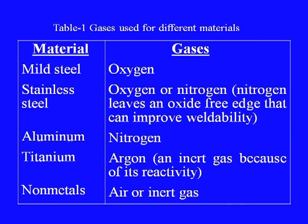The use of different assist gases with different work materials is given in a table. For mild steel, oxygen is used as the assist gas. For stainless steel, oxygen or nitrogen is used; nitrogen leaves an oxide-free edge that can improve weldability. For aluminum, nitrogen is used as the assist gas. For titanium machining, argon gas is used as the assist gas. For nonmetals, generally air or any inert gas like argon is used.